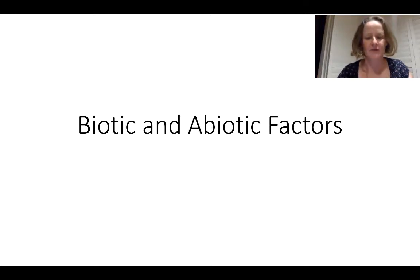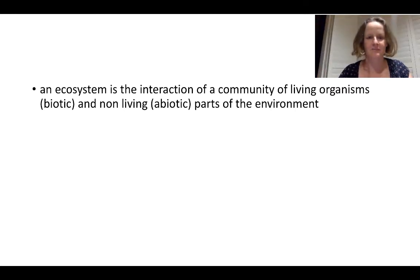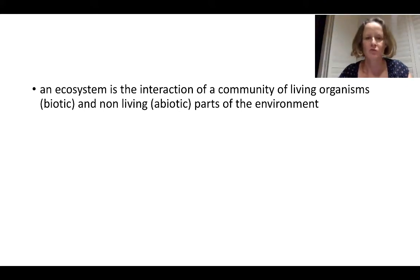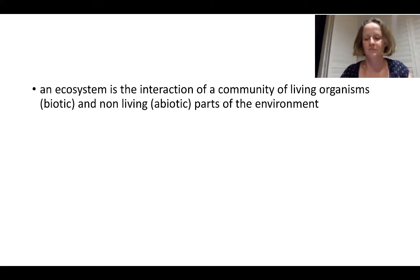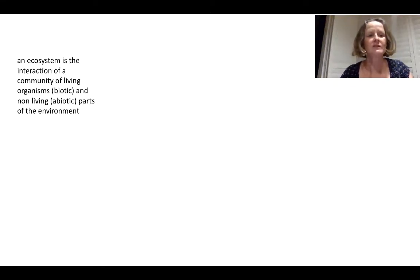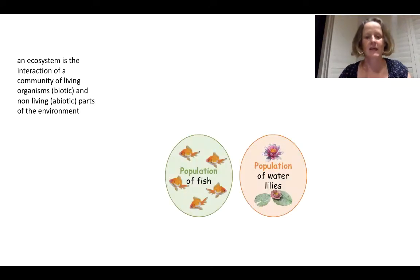Biotic and abiotic factors. In an ecosystem we need to think about the interaction of the community of living organisms and all the non-living parts of that environment. Those two things make up our biotic components — those are the living things — and the non-living things are abiotic. So an ecosystem is that interaction between biotic and abiotic.